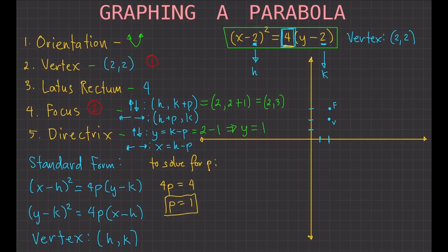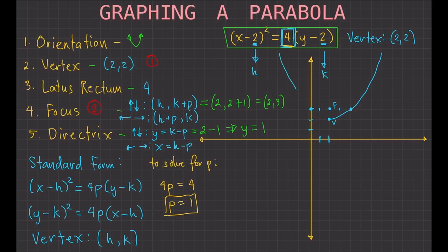The third thing to consider is the latus rectum, which gives the width of the parabola. Since the latus rectum is 4 and it passes through the focus, we divide by 2 to get 2. From the focus, we move 2 units left and 2 units right, since the parabola opens upward. We can now approximate the curve of the parabola passing through those points and the vertex.